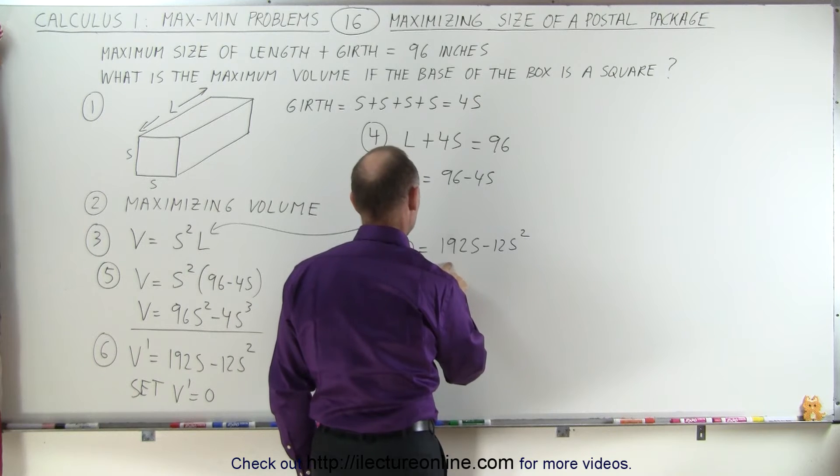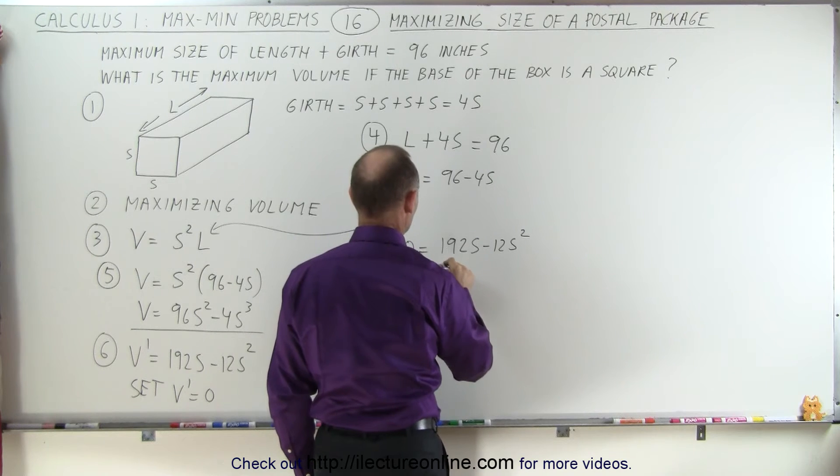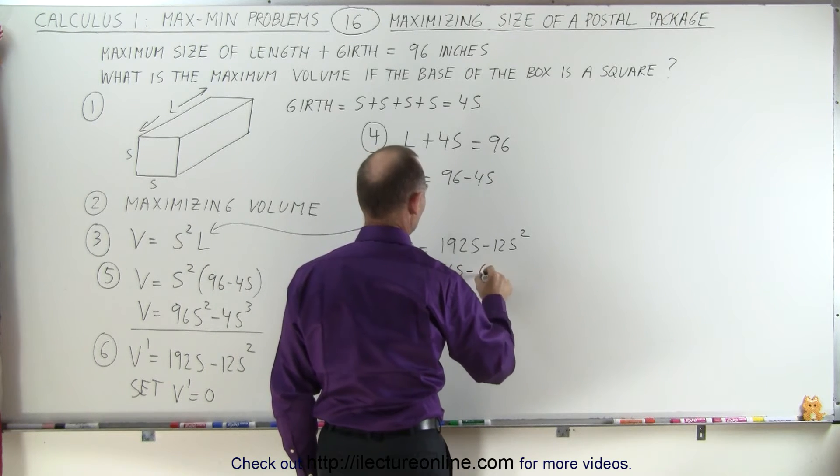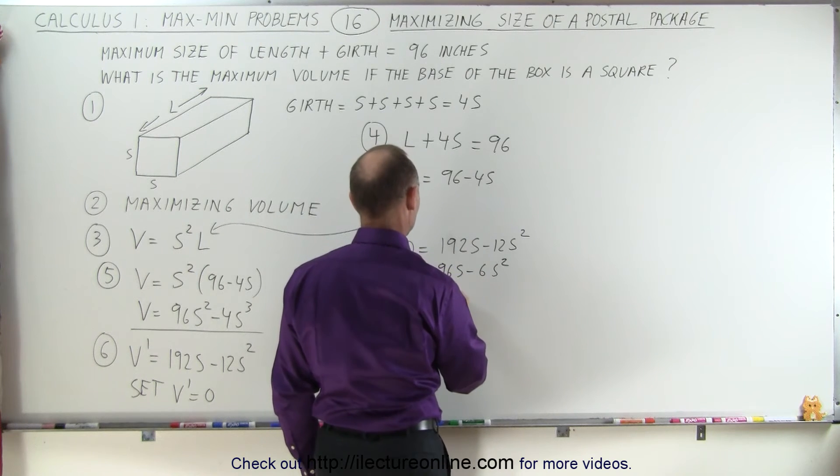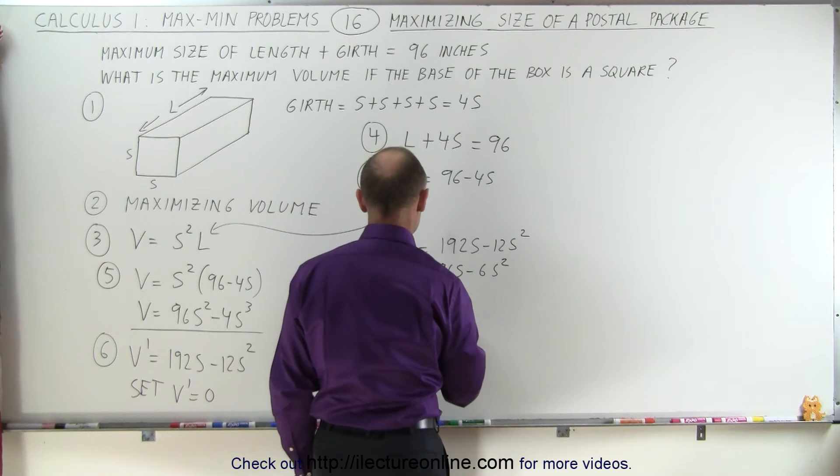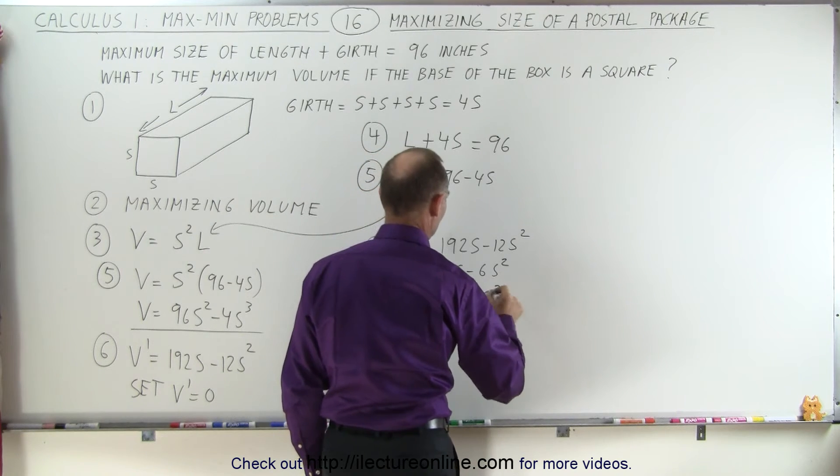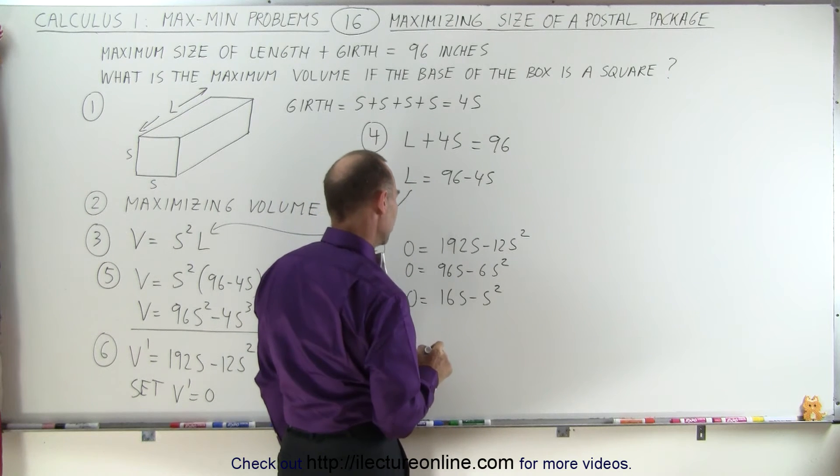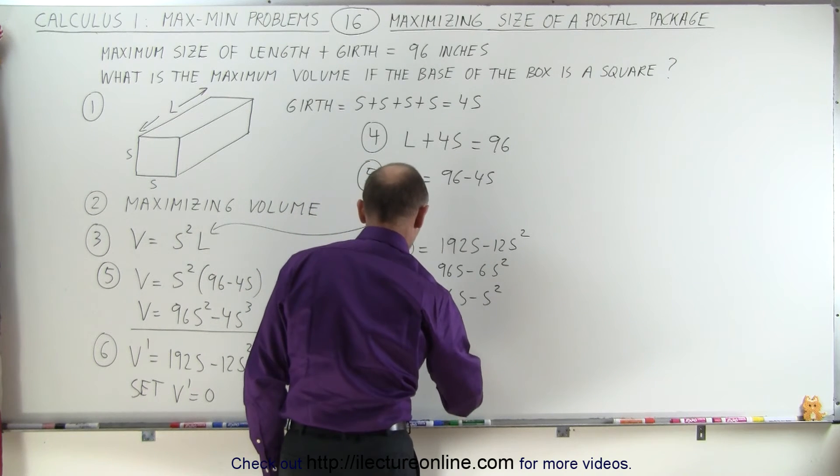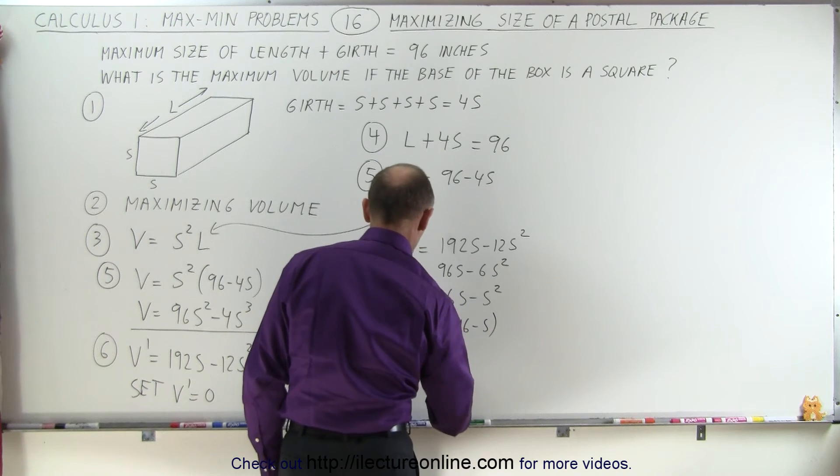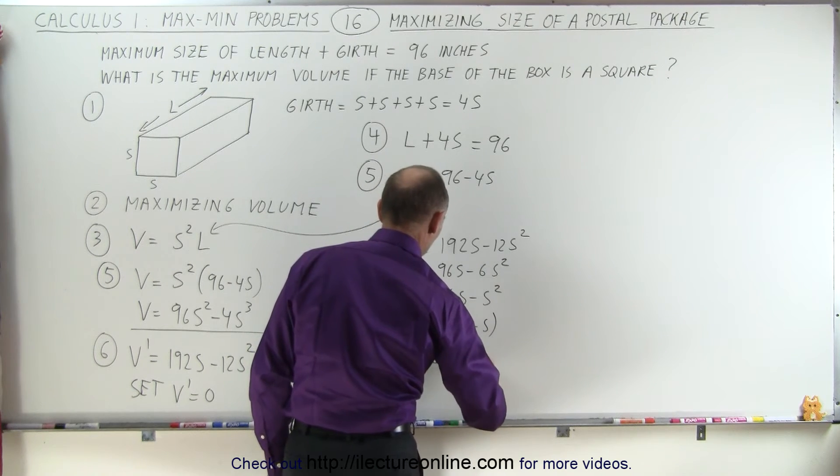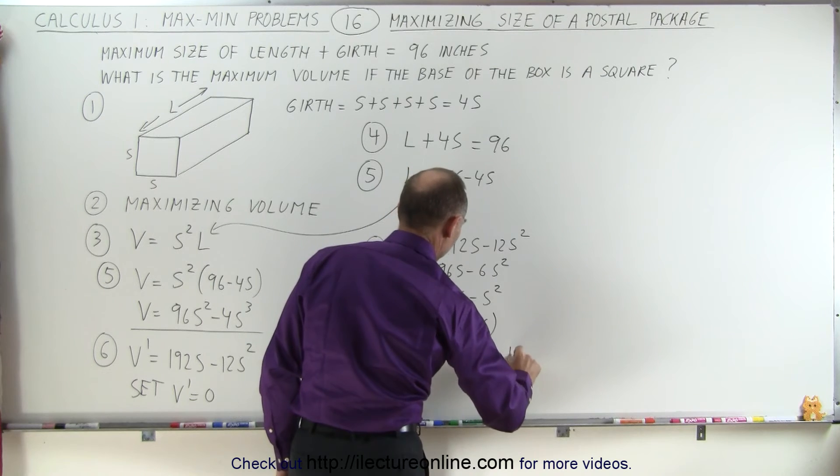Dividing both sides by 2: 0 = 96s - 6s². Dividing by 6: 0 = 16s - s². Factoring out s: 0 = s(16 - s). So s = 0 or s = 16.